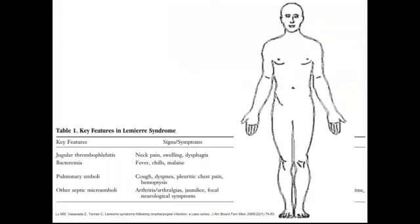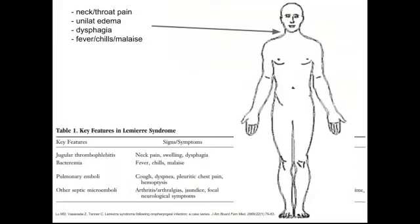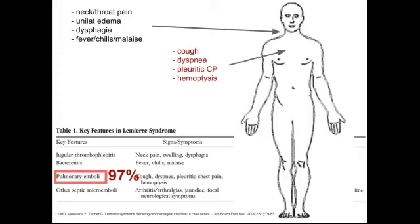Let's talk about the features of Lemierre's syndrome. Initially, a patient has a history of some kind of neck or throat pain, tends to have unilateral symptoms, can be complaining of dysphagia, fever, chills, and malaise. Next, watch out for any kind of cough, dyspnea, pleuritic chest pain, or hemoptysis — because 97% of Lemierre's patients end up having a pulmonary septic embolus.